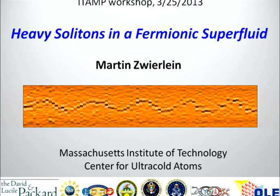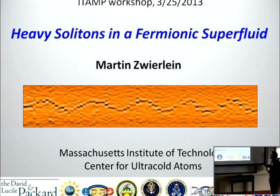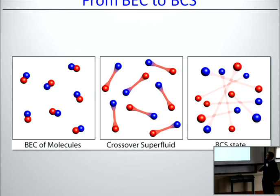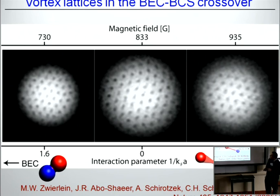We'd like to thank the organizers for inviting me to this stimulating workshop. I'll be talking about heavy solitons in a fermionic superfluid. The system we use is a spin-1/2 gas of lithium-6 fermions with strong interactions. We can tune the interactions between spin-up and spin-down at will, going from a Bose-Einstein condensate of molecules through a crossover superfluid into the BCS regime. This gas can become superfluid at low temperatures.